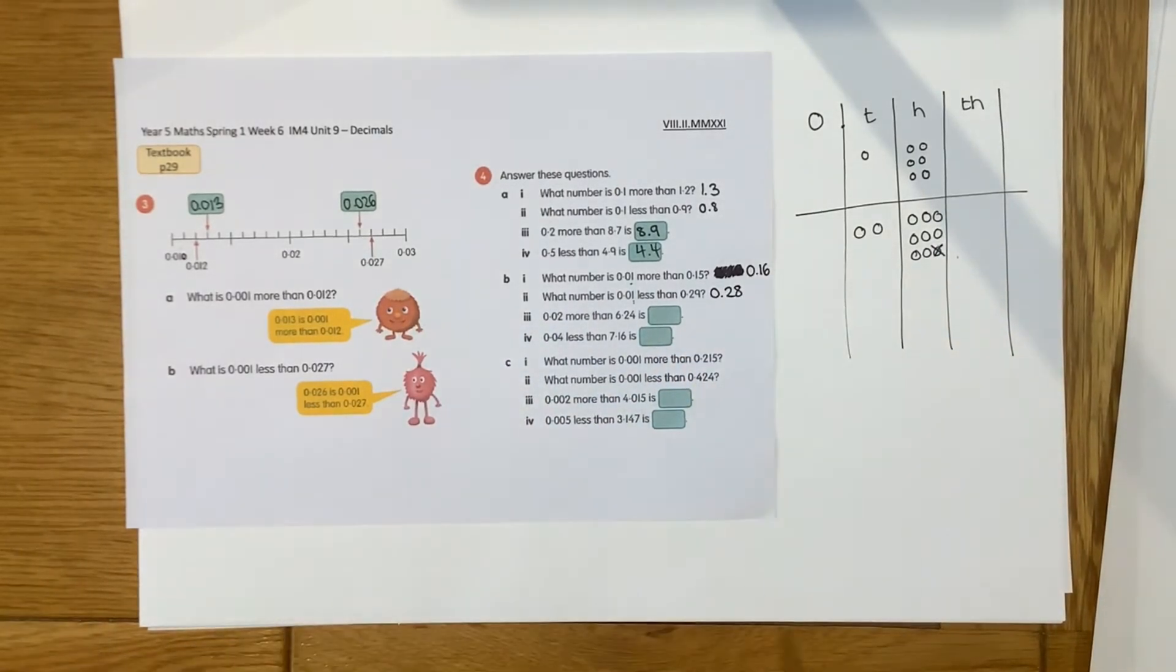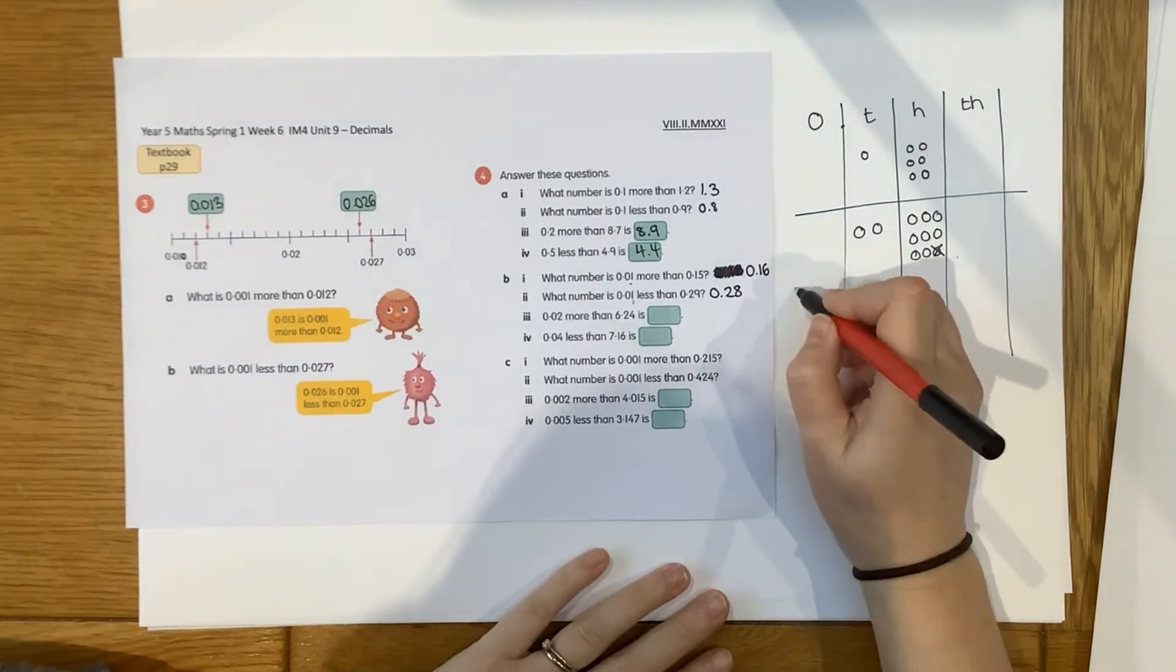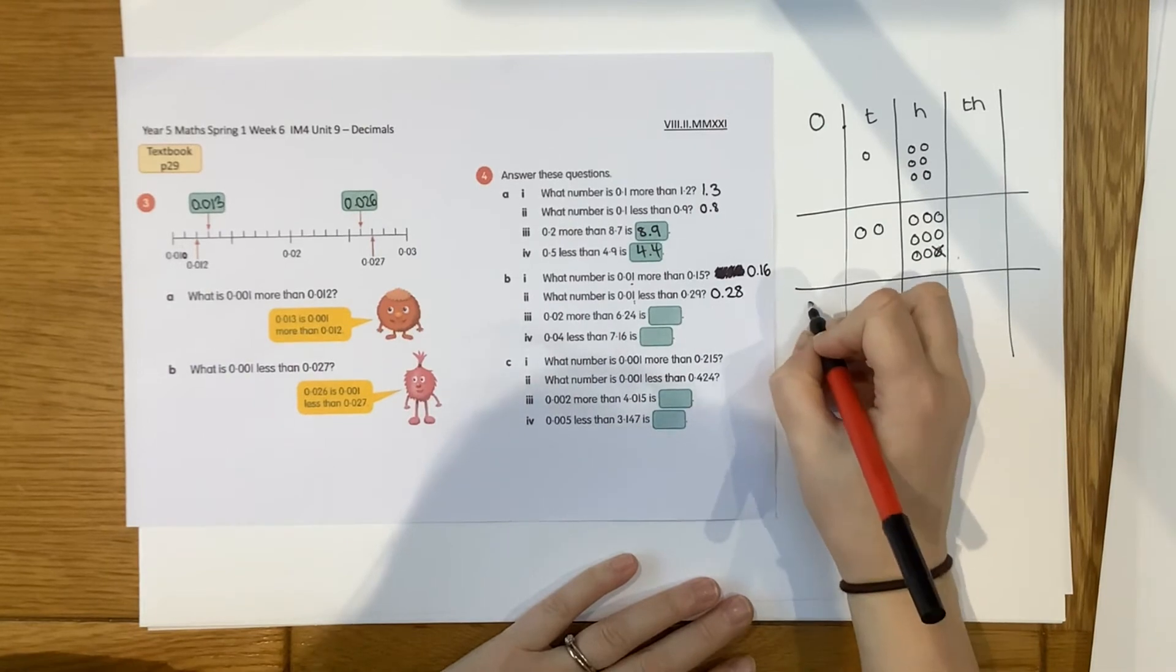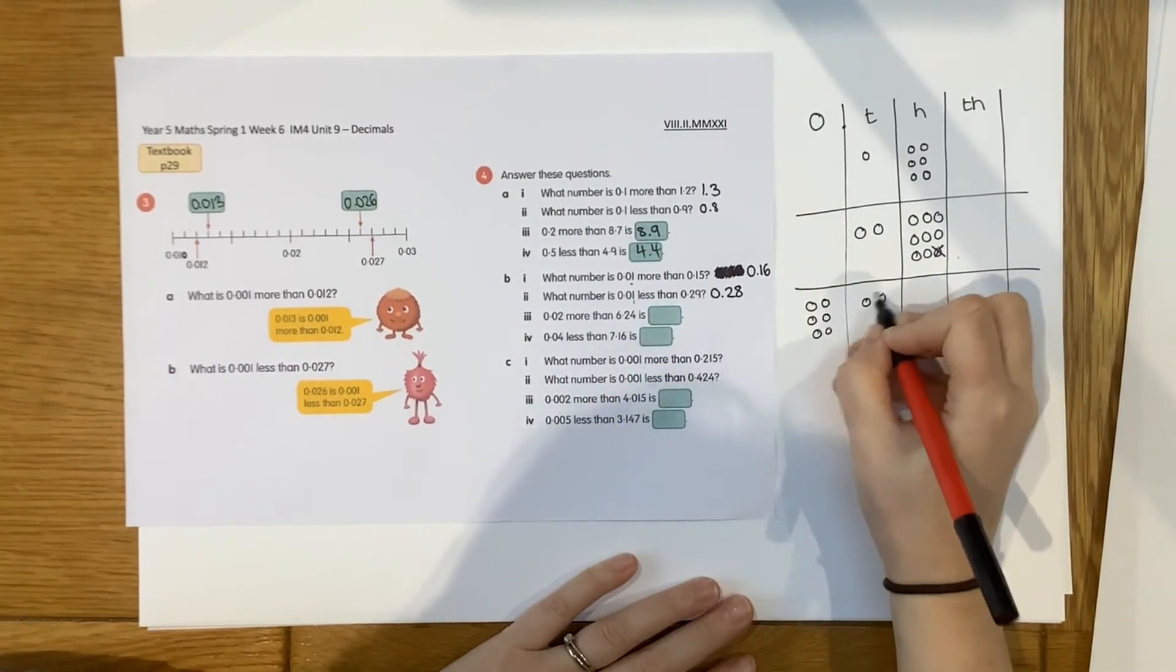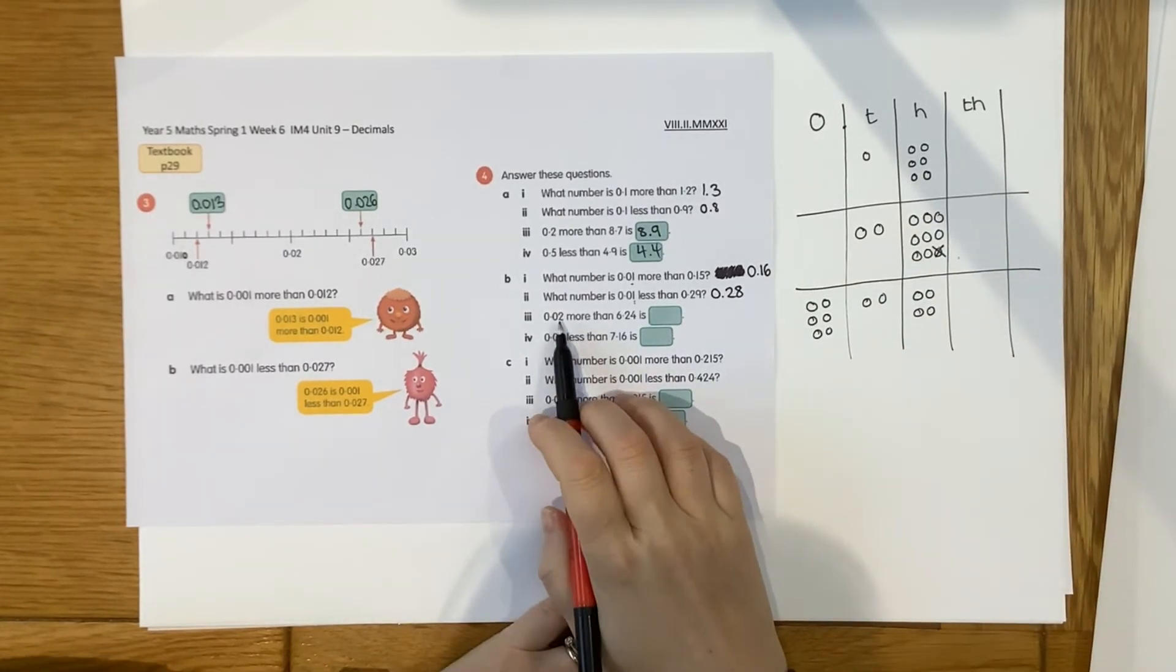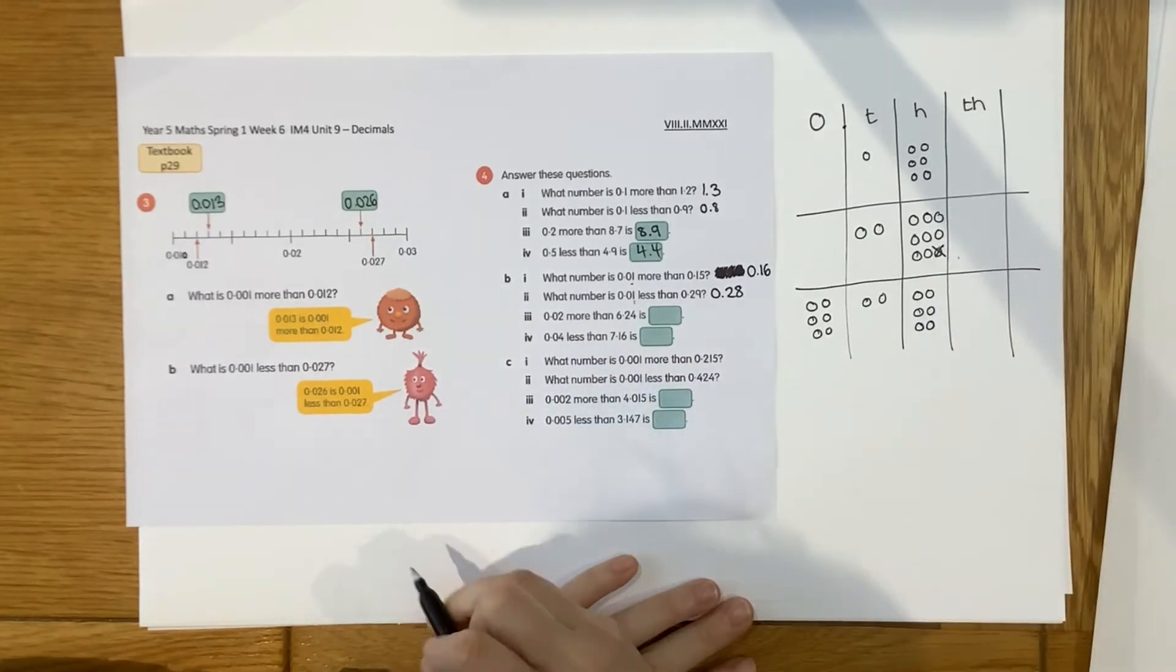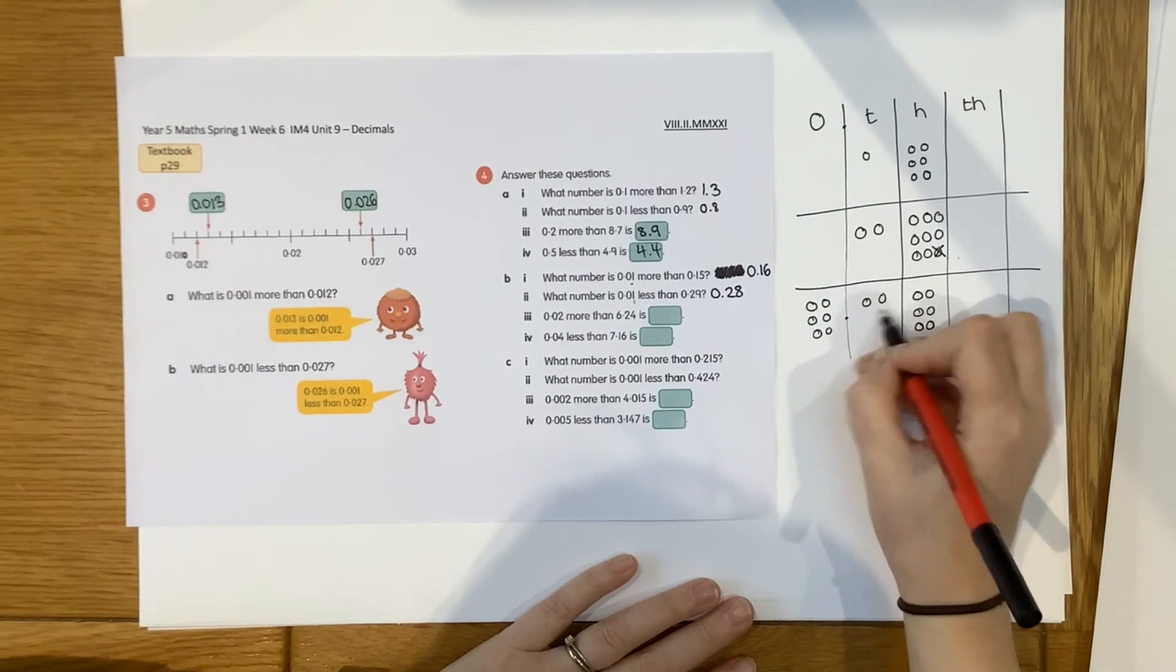Okay, and then we'll do these in the same way. 0.02 more than 6.24. So let's build 6.24 first. So 6 whole ones. 2 tenths and 4 hundredths. Like that. And I want 2 hundredths more. So I'll put 2 more in the hundredths column. And that gives us the number 6.26.